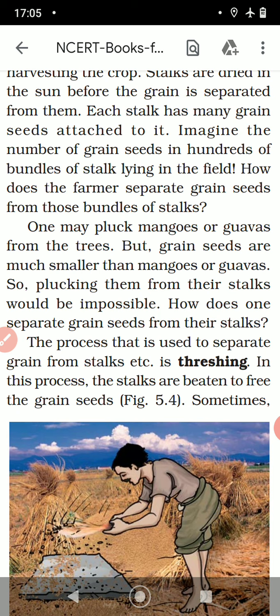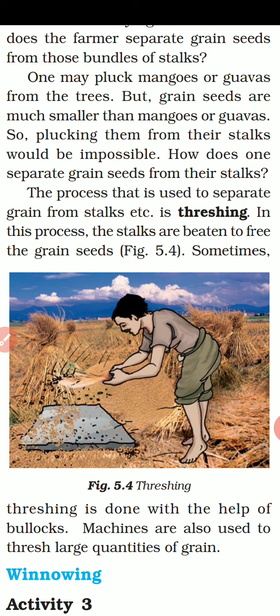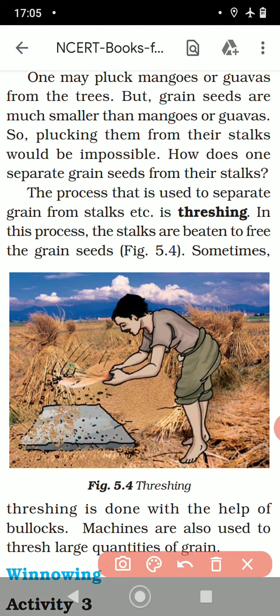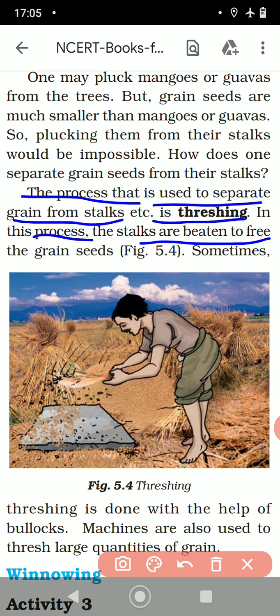Imagine the number of grain seeds in hundreds of bundles of stock lying in the field. How does the farmer separate grain seeds from these bundles? Plucking grain seeds from stocks would be impossible as they are much smaller than mangoes or guavas. The process used to separate grain from stock is called threshing — please underline this, children, it is a very important definition. In threshing, the stocks are beaten to free the grain seeds.